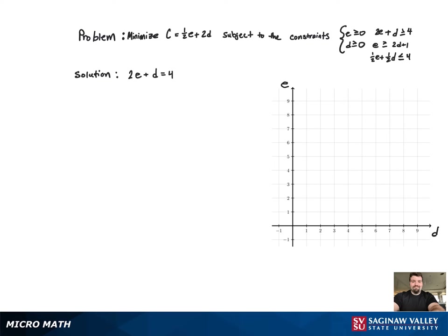Now we'll move on to the next inequality, 2e plus d greater than or equal to 4. To graph that inequality, we must first switch it to an equation and graph the line. We're going to find two points, the e and d intercept.